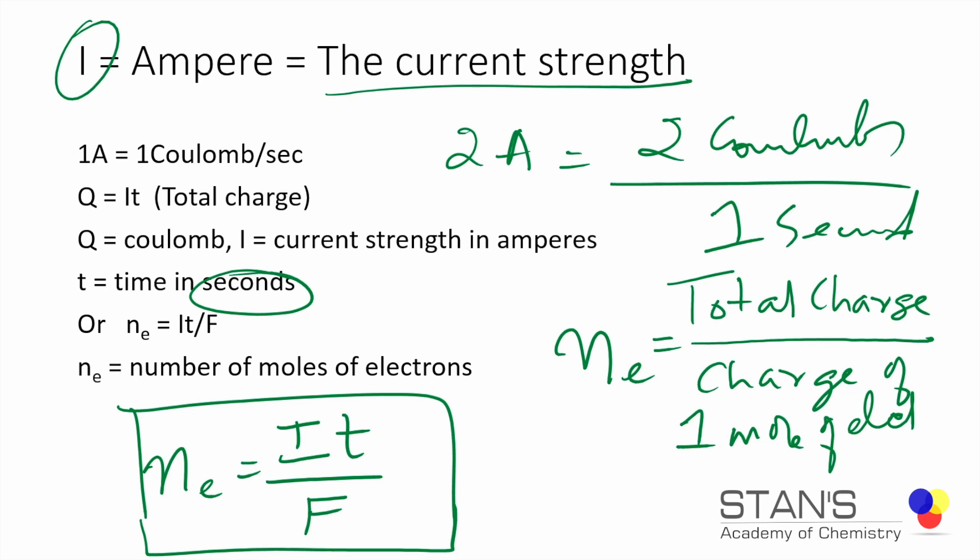You always need to calculate the total number of moles of electrons that are passing through a circuit, and then you can actually calculate the amount of substance that is produced at a given electrode during electrolysis or electrolytic reduction.